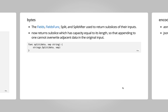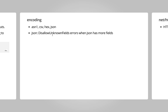Relating back to the three-index slices: the strings Fields, FieldsFunc, Split, and SplitAfter functions now return subslices where the capacity equals the length. So whatever we discussed about three-index slicing — all four of those functions introduce that change, which means you won't cause any unintended effect on the original slice.